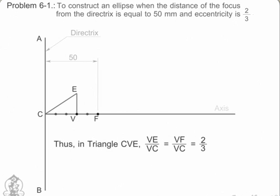Thus, in triangle CVE, VE upon VC equals VF upon VC equals 2 by 3.